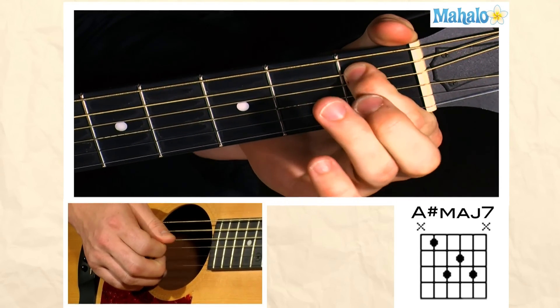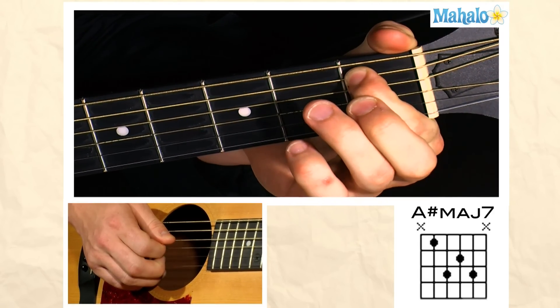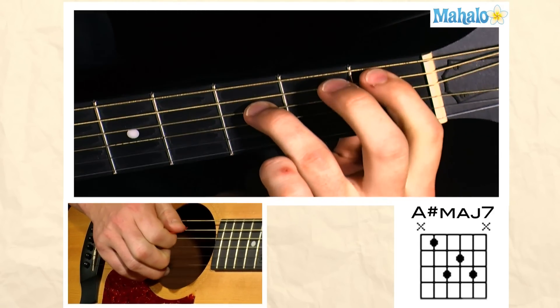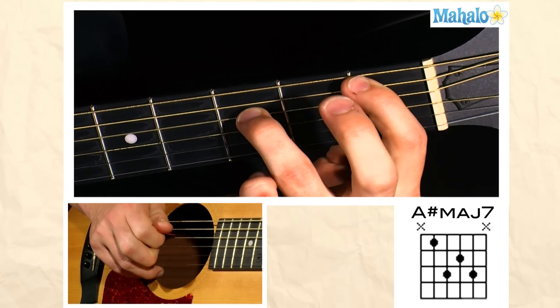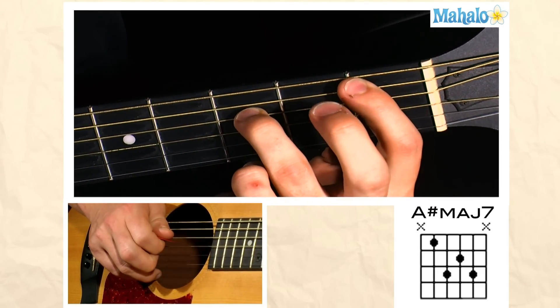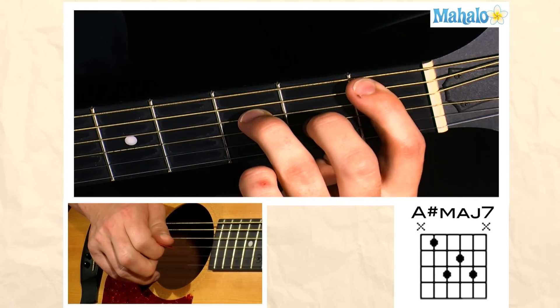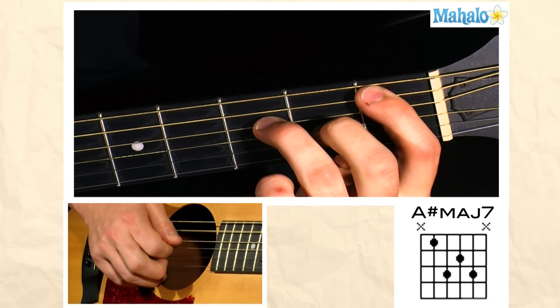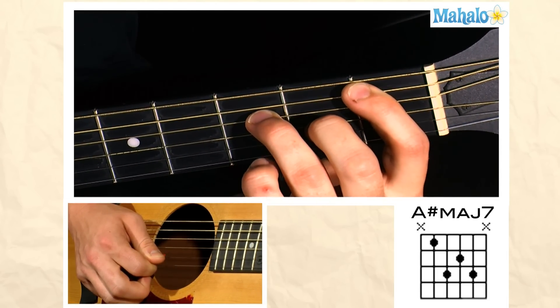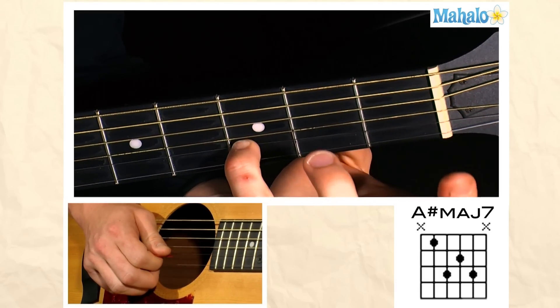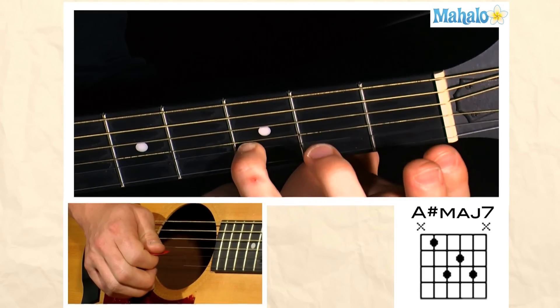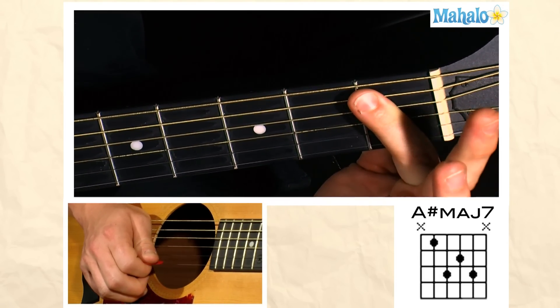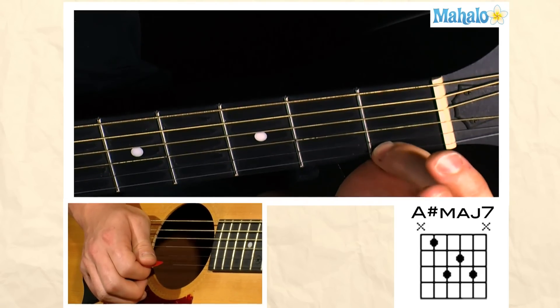What we're going to do is we're going to take our first fret of the A string, then we're going to create our solid bass with our third finger on the third fret of the D string, and then we're going to bring our middle finger on the second fret of the G string, and then we bring our pinky to the third fret of the B string, and we just hold this first finger all the way down so we can get that last note.